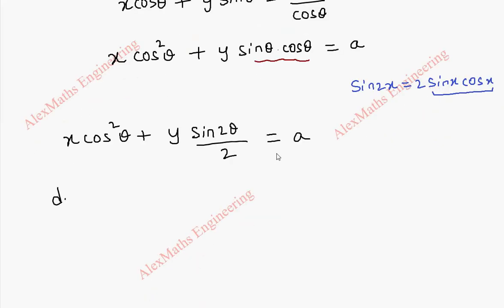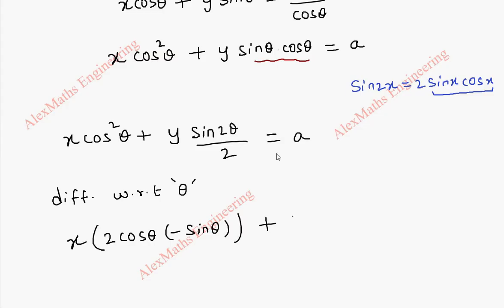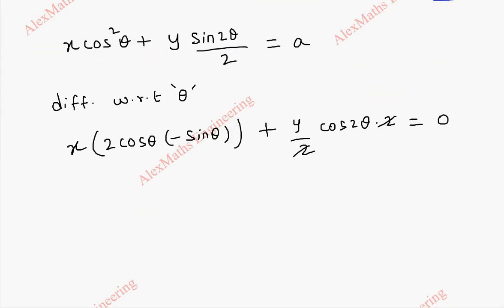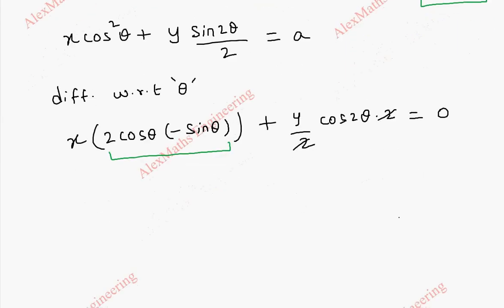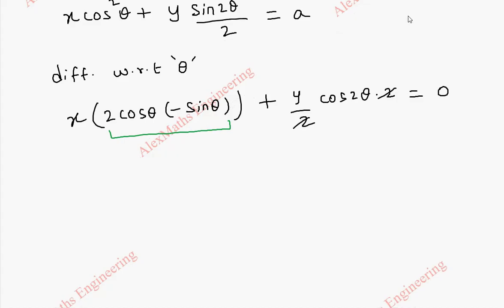Now I am going to differentiate this with respect to the parameter theta. Here x is a constant. cos²θ differentiates to 2cosθ·(-sinθ), plus y/2 is a constant, and the differentiation of sin2θ is cos2θ·2. We can cancel the 2s, and the 2sinθcosθ form gives us sin2θ. So the first term is x·(-sin2θ).